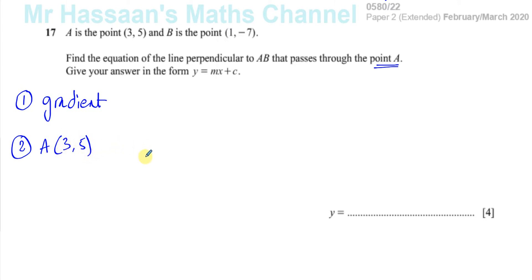Now our objective is to find the gradient of the line which is perpendicular to AB. So let's first find the gradient of the line AB. The gradient of AB is the change in Y, so it's 5 minus minus 7, divided by the change in X which is 3 minus 1. That gives you 5 plus 7 which is 12 over 3 minus 1 which is 2, which is 6. So the gradient of AB is 6.